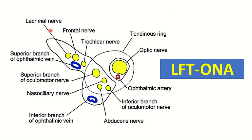Here we can see the nerves passing through the superior orbital fissure. First of all, the lacrimal nerve, then the frontal nerve, then the trochlear nerve. We also have the superior branch and inferior branch of the oculomotor nerve, the nasociliary nerve, and the abducent nerve.